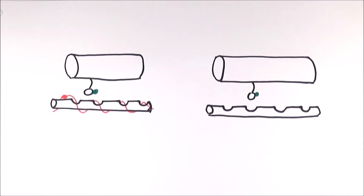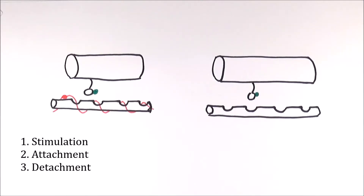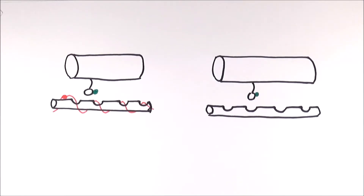In this video, we'll be looking at the actual sliding filament model, the mechanism of muscle contraction. It can be split up into three parts. The first part will be stimulation, the second part attachment, and the third part detachment. So we'll go through these stages as we go along the different pictures here. The first stage is stimulation.